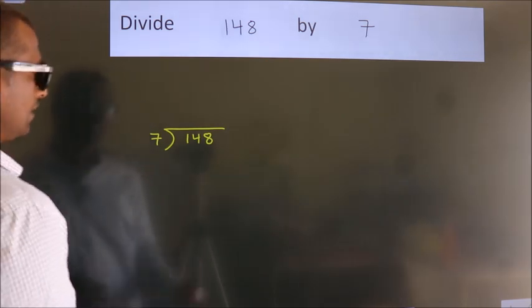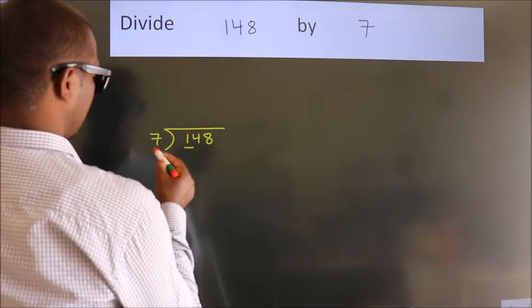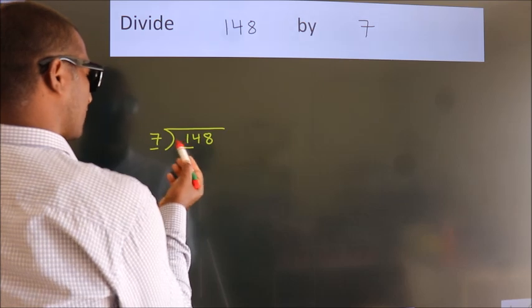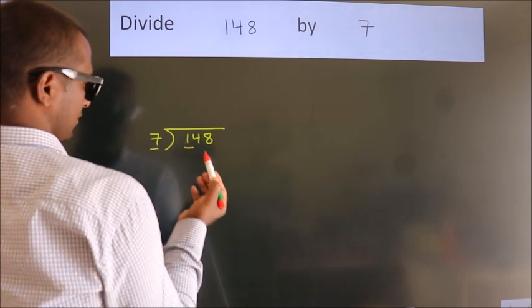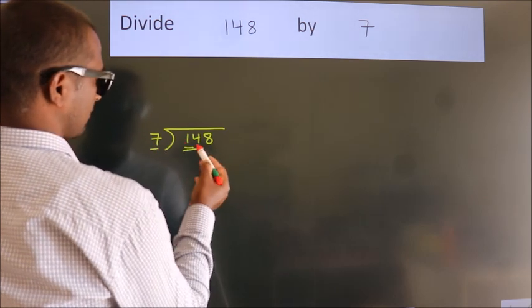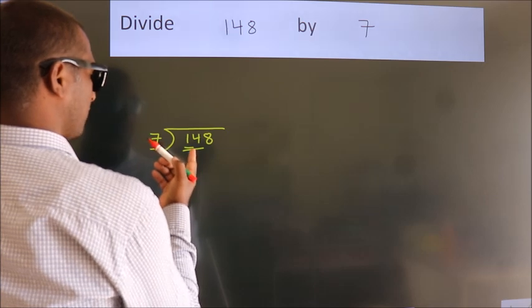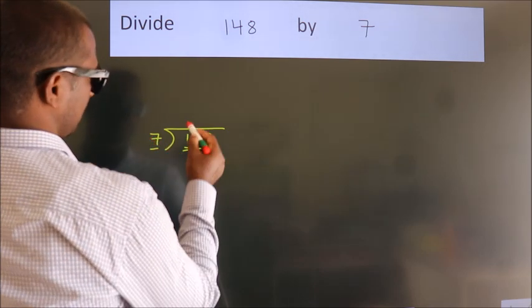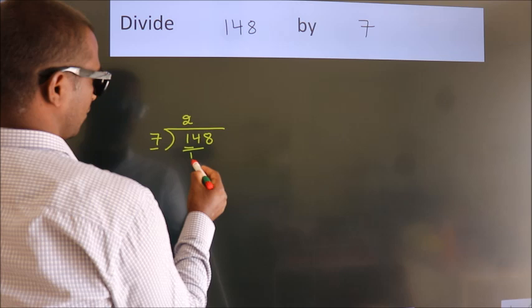Next, here we have 1, here 7. 1 is smaller than 7, so we should take 2 numbers: 14. When do we get 14? In the 7 table, 7 twos, 14.